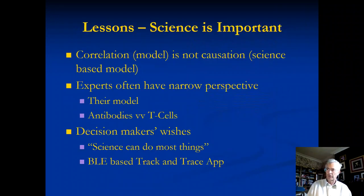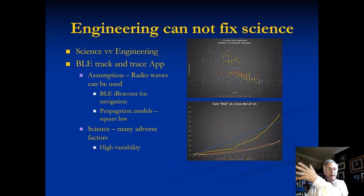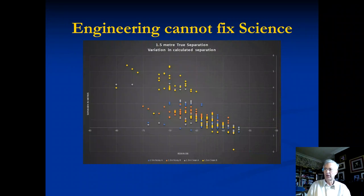Science is enormously important. The lessons here: correlation is not causation. Experts have narrow perspectives. One of the problems is the decision makers say science can do anything, fix it, just go fix it, it can be done. But we look at the Bluetooth apps, the distance measuring apps, they don't work. This is why it doesn't. BLE doesn't give good answers for distance because of the physics. There's too many random different parameters that are variable. It just can't be done, and this shows you why.